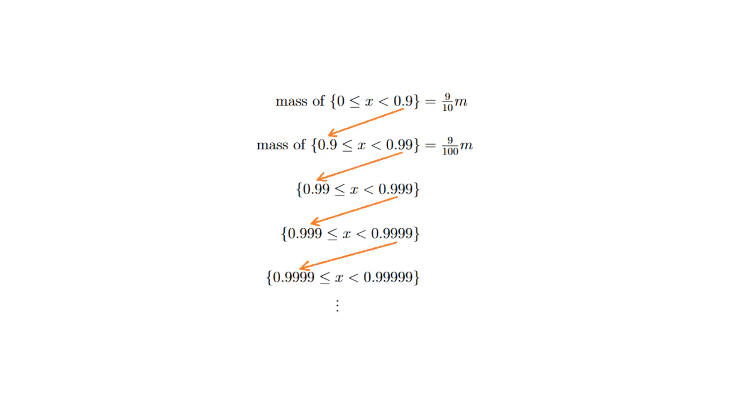And continuing the pattern, we can form an infinite sequence of adjacent pieces of the number line as shown. And each of these pieces has the mass that you'd expect. So the sequence of masses here goes nine-tenths of m, then nine-hundredths of m, then nine-thousandths of m, and so on.